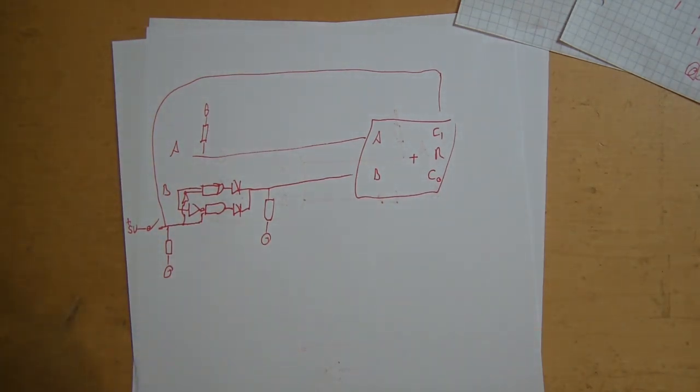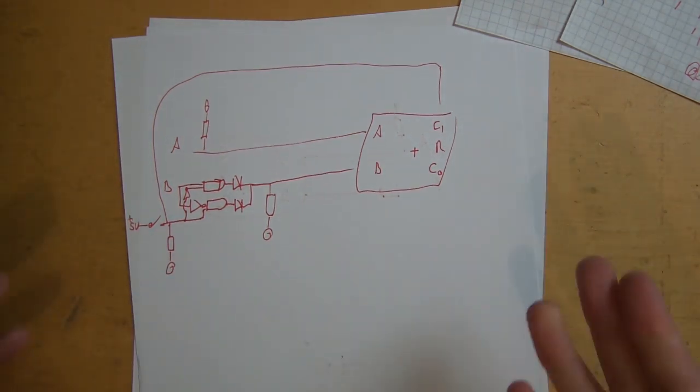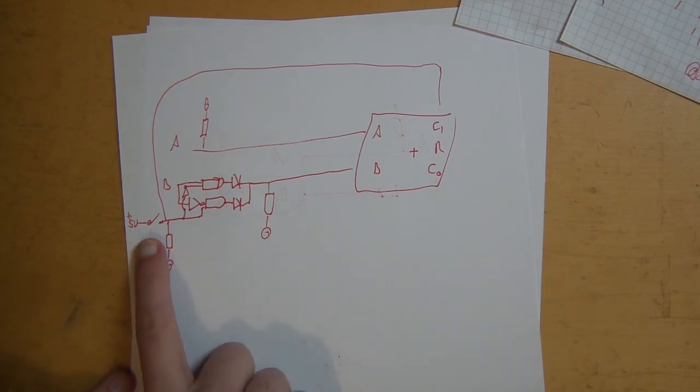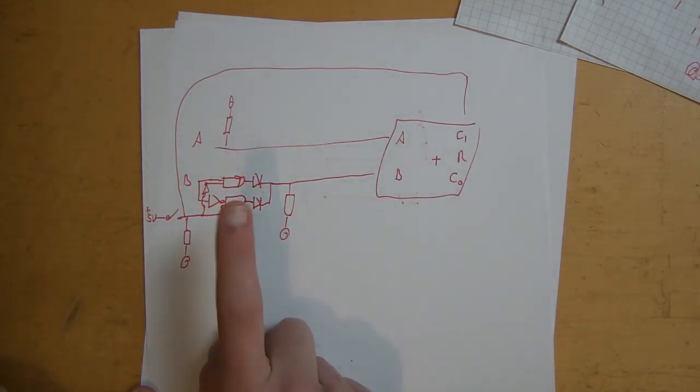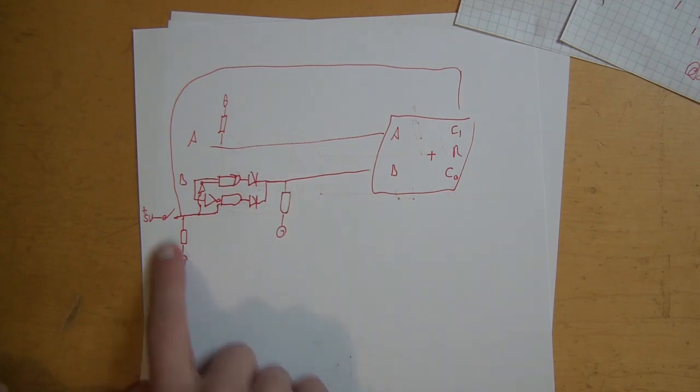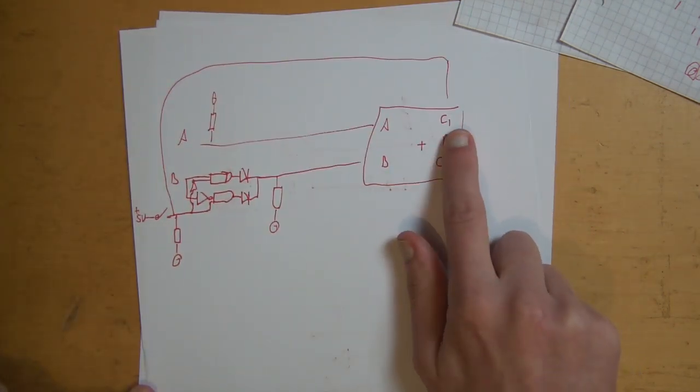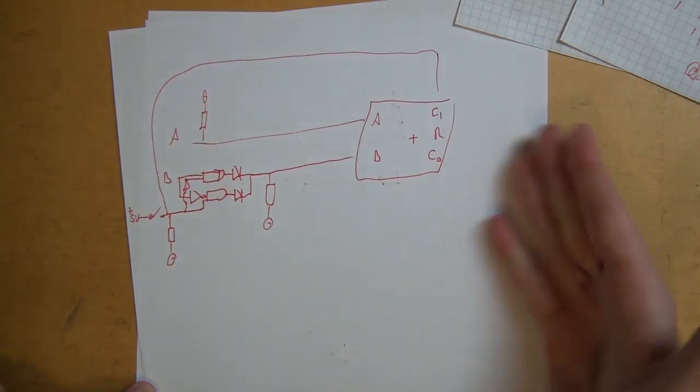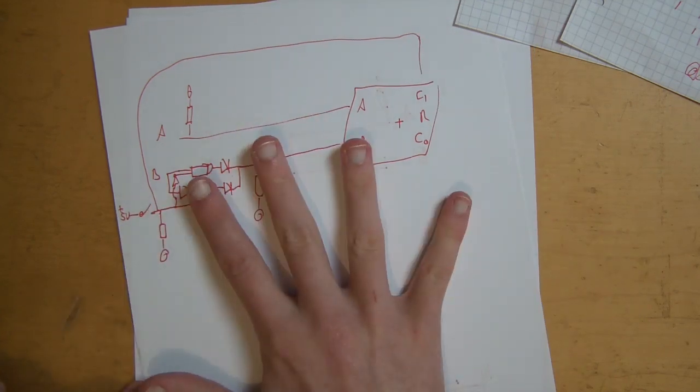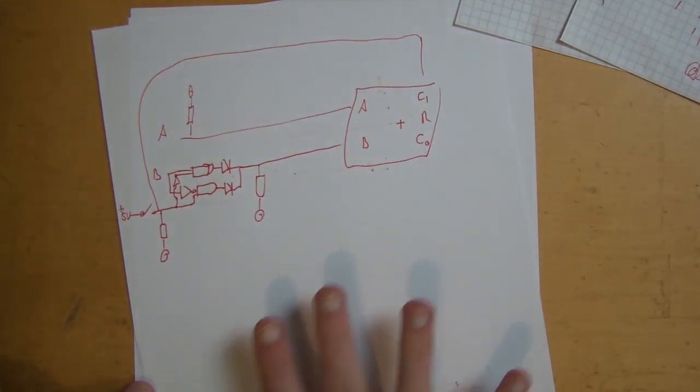Then you would connect this directly to the carry in. It already has a pulldown resistor. And that is our addition and subtraction. Whenever we close the switch we have a subtraction, otherwise we have an addition. Because when we close the switch, this is true, this is false, so the inverted B comes true. At the same time, carry in is 1, which is equal to plus 1 as I talked about last time. So this will be subtraction and addition in one.